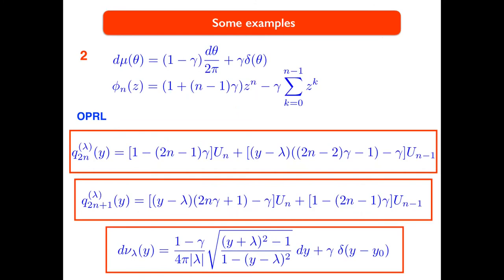The other example is related not with an absolutely continuous measure but a measure with a singular part — that means we have a Dirac mass located at theta equal to zero. It is well known that the corresponding sequence of orthogonal polynomials is given explicitly as shown in the slide. Assuming this case, the sequence of Laurent orthogonal polynomials leads back to orthogonal polynomials on the real line associated with this family, and we can prove that the corresponding sequence of orthogonal polynomials associated with the pencil is exactly defined in terms of Chebyshev polynomials of the second kind. We are also able to find the corresponding measure.